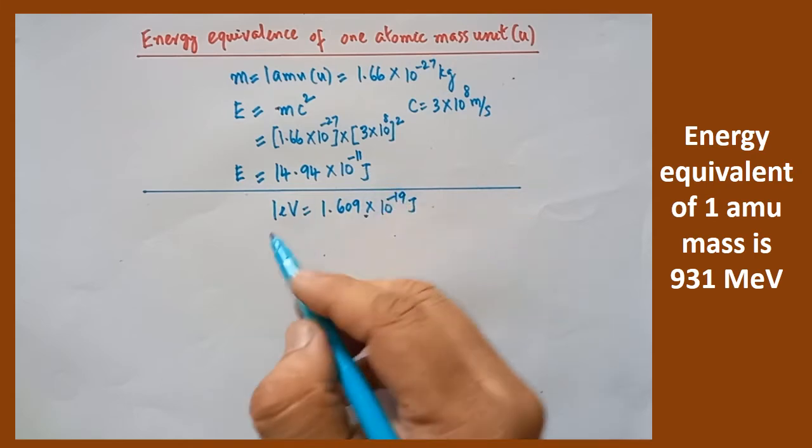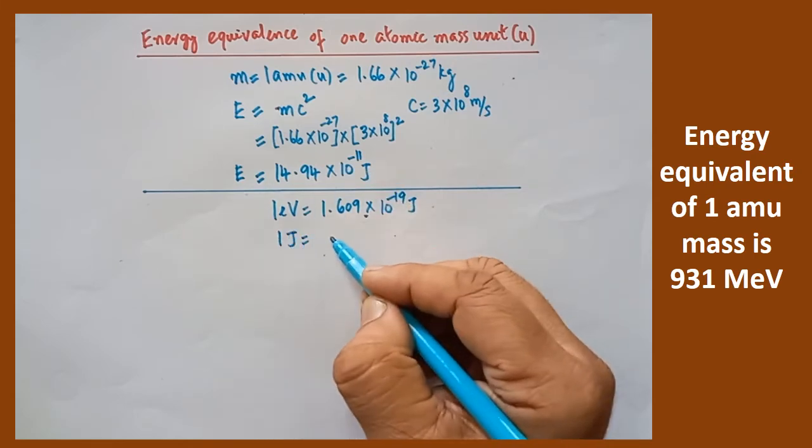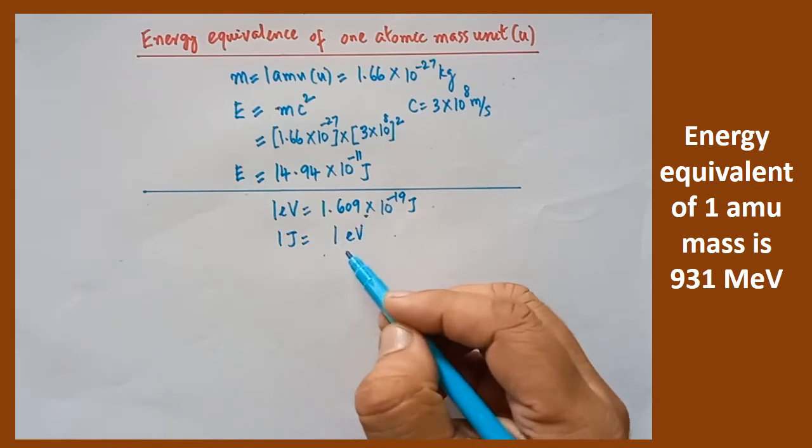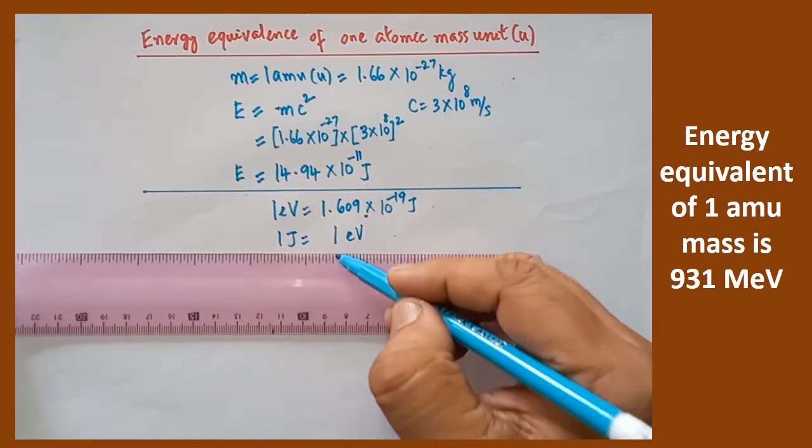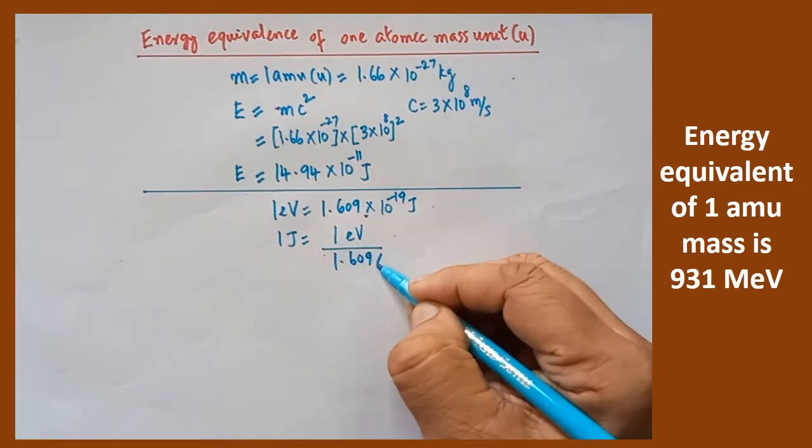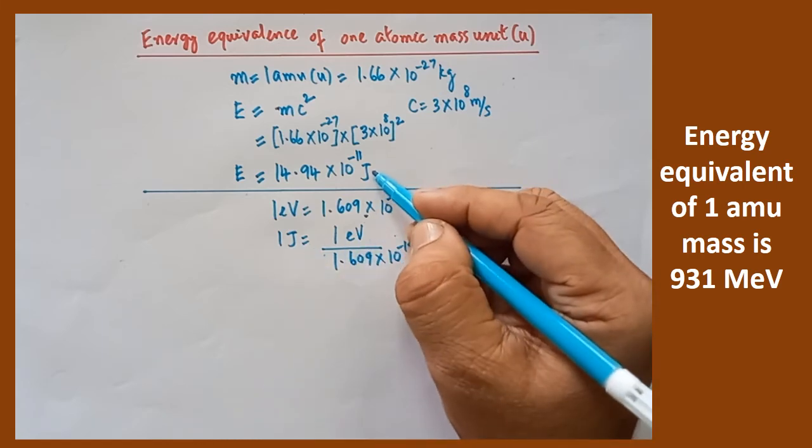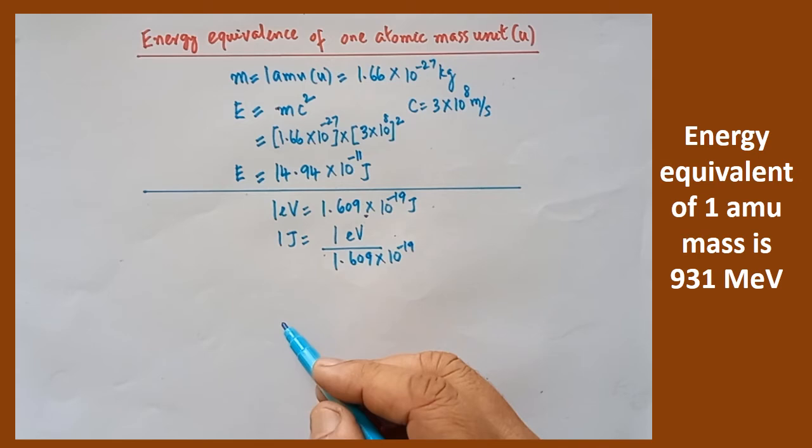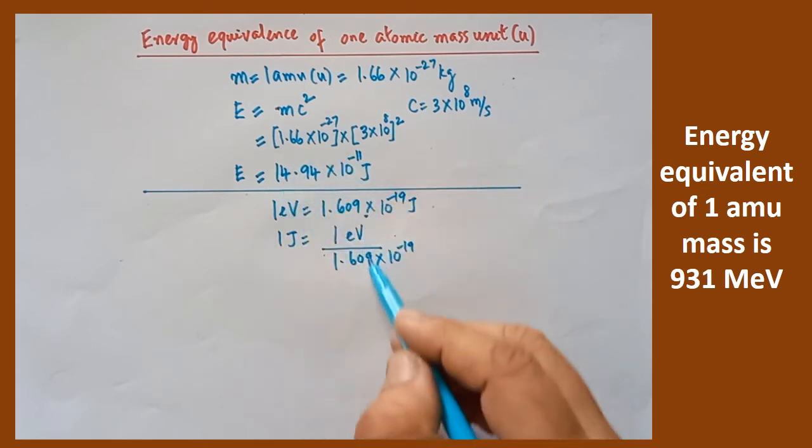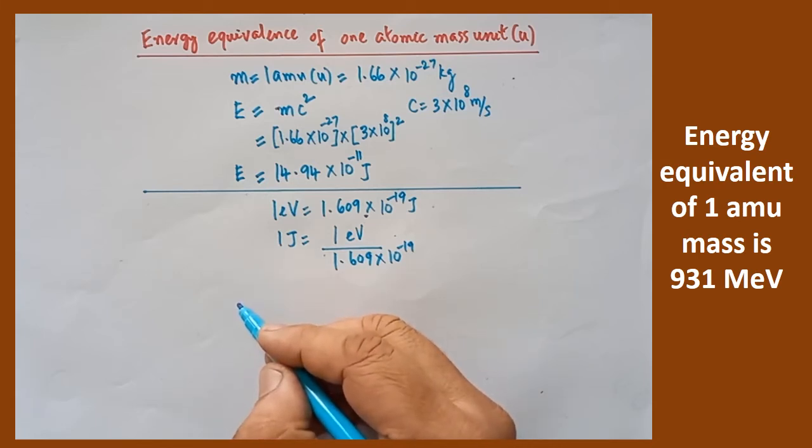But our aim is to convert Joules into electron volt. So what we have to do? 1 Joules is equal to 1 electron volt divided by 1.609 into 10 to the power of minus 19. So this is the method of converting Joules into electron volt. Now we know the value of the energy in terms of Joules. So what we have to do? This factor, this value must be divided by this one. So I am going to write the value in the next step.